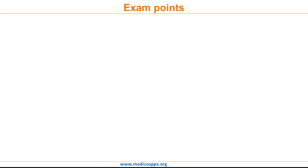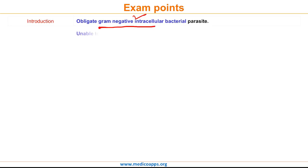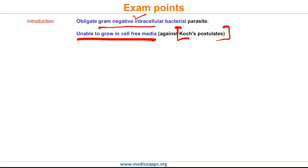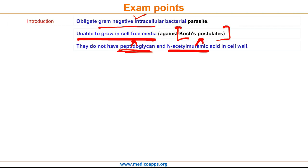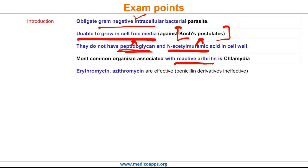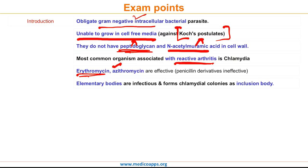Let's end today's MedecoApps Masterclass by reviewing the most important exam points. Chlamydia is an obligate gram-negative intracellular bacterial parasite. It cannot grow in cell-free media, hence is an exception to Koch's postulates. It does not have peptidoglycan and N-acetylmuramic acid in its cell wall. It is the most common organism associated with reactive arthritis. Erythromycin and azithromycin are effective in treatment, whereas penicillin and its derivatives are ineffective. Elementary bodies are infectious, and reticulate bodies form chlamydial colonies as inclusion bodies.